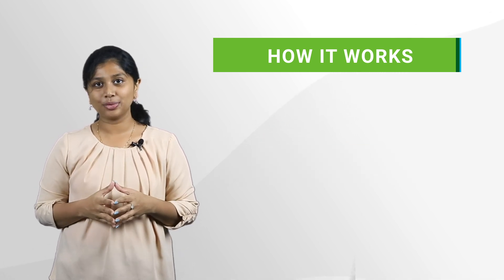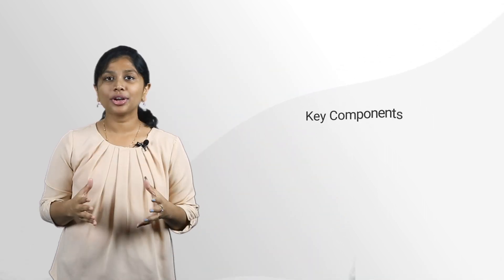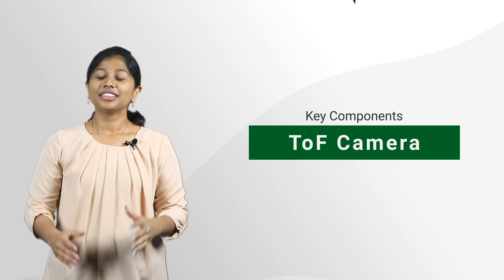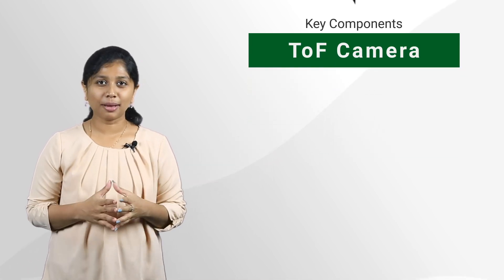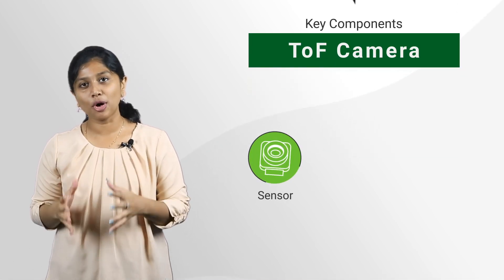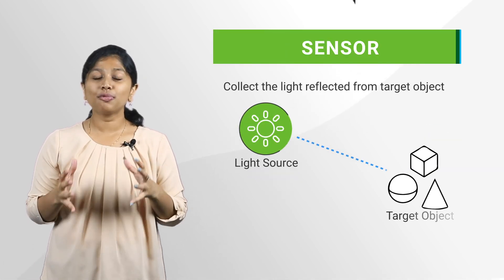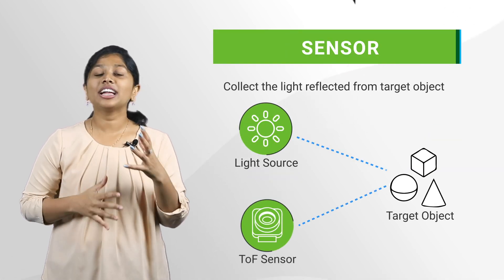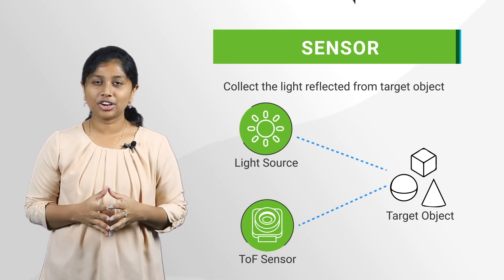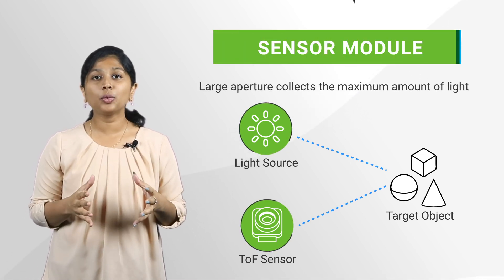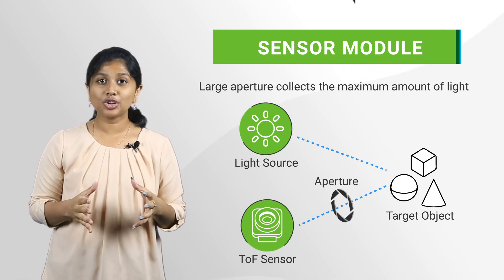Now let us look at the key components of the time-of-flight camera. At the very core is the sensor and the sensor module. The key function of the sensor is to collect the light reflected from the target object. In addition to the sensor, the sensor module also houses the optics, which typically come with a large aperture for the collection of the maximum amount of light.